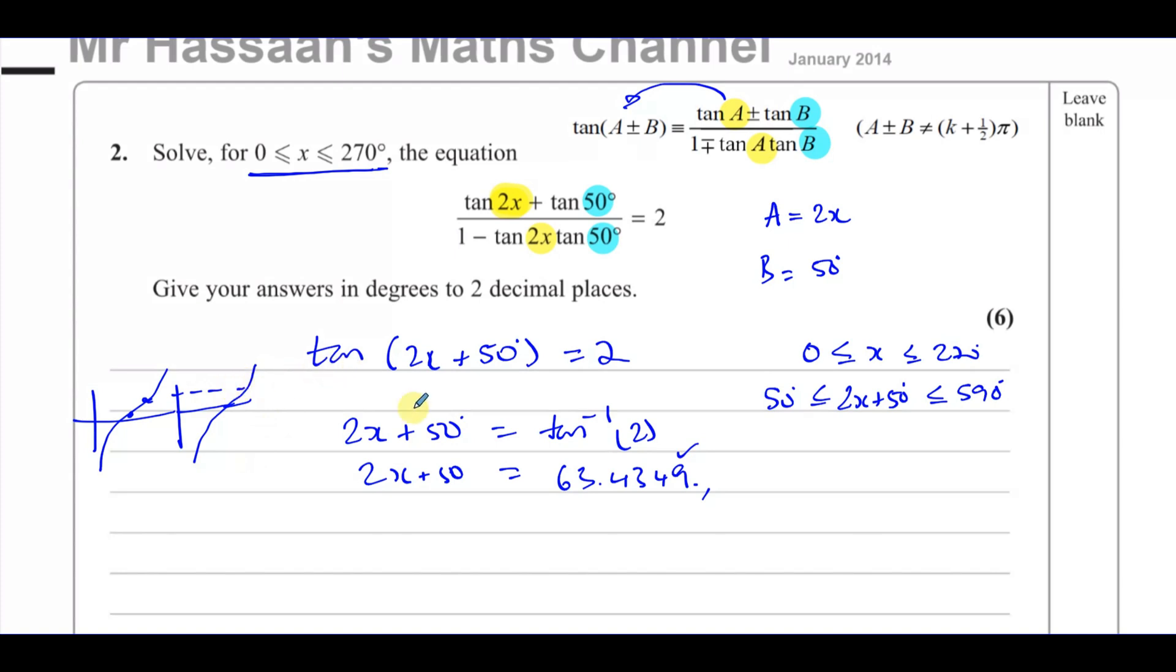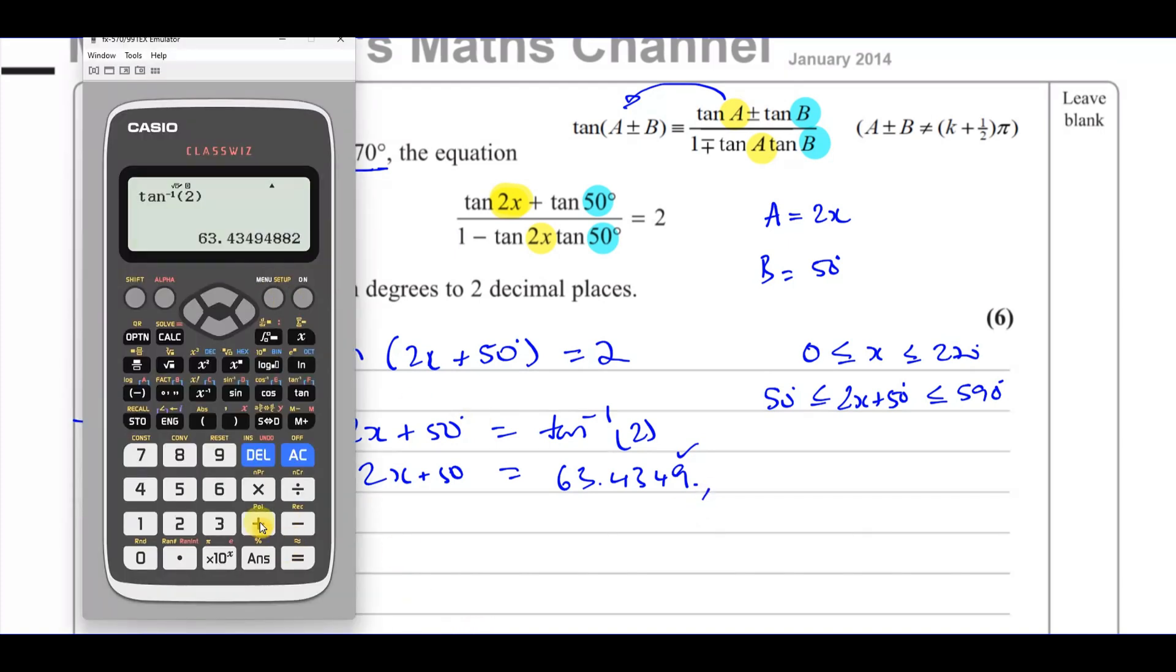So this angle here repeats again after 180 degrees and again after 180 degrees. So we're going to take this angle and we're going to simply just add 180 to it. We don't have to go backwards because we start from 50.